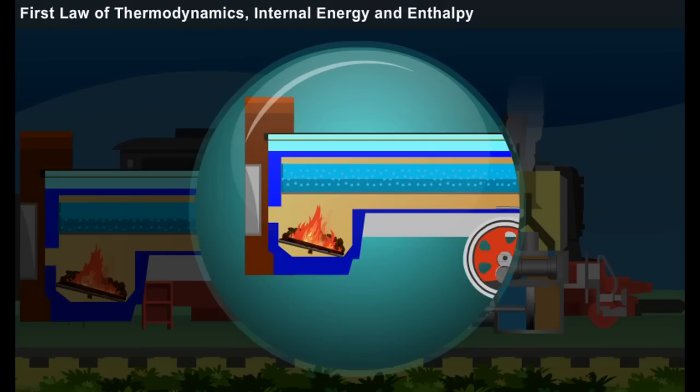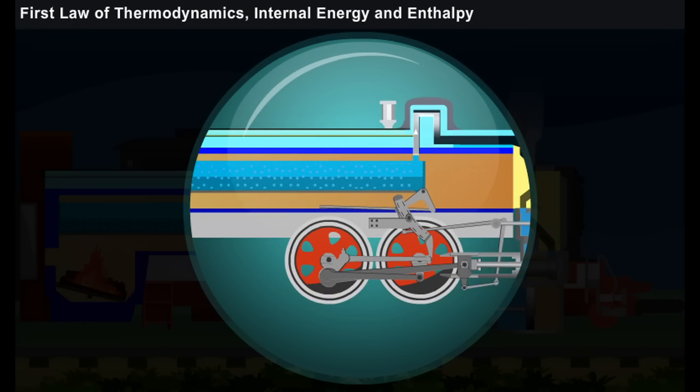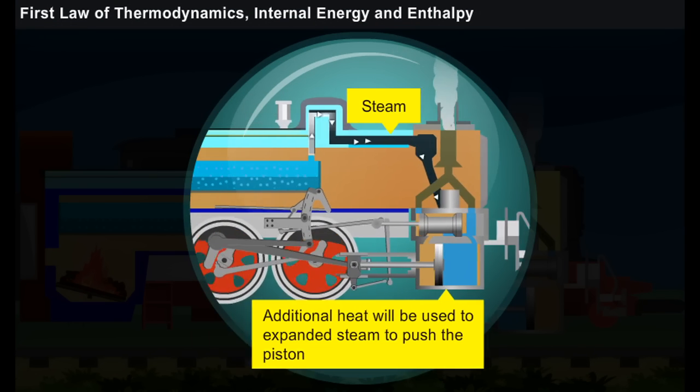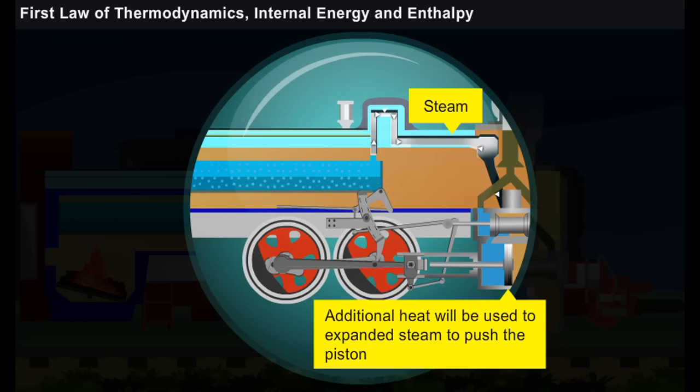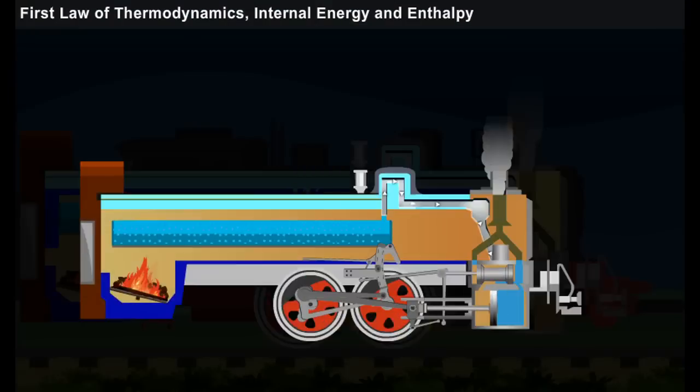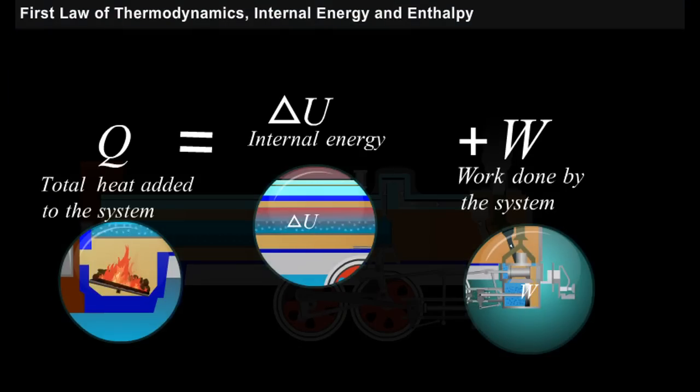Now, the supplied additional heat is used to expand steam to push the piston in the steam engine. And thus, the total heat supplied is used to increase the internal energy and also to do work, that is W.